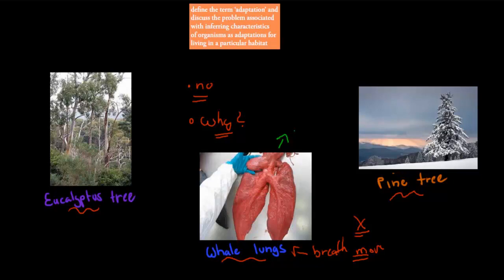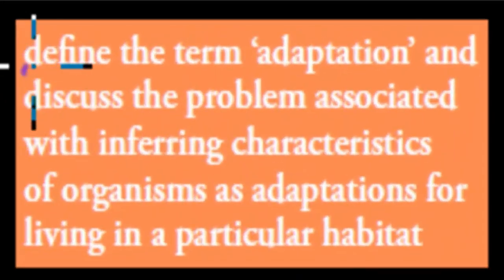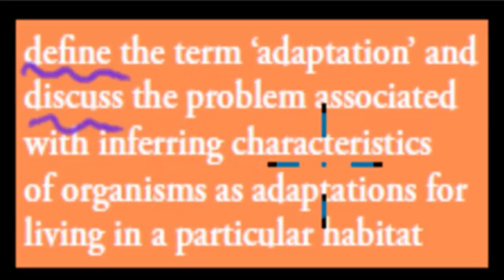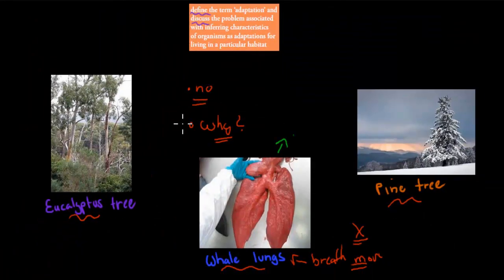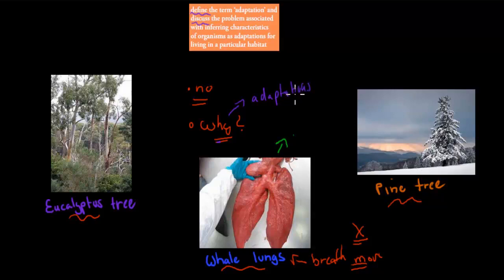The reason I'm saying all this is because the learning point we're covering today is: define the term adaptation, and discuss the problems associated with inferring characteristics of organisms as adaptations for living in particular habitats. The first part we're going to talk about is adaptations — why certain things can survive in certain environments but not others.